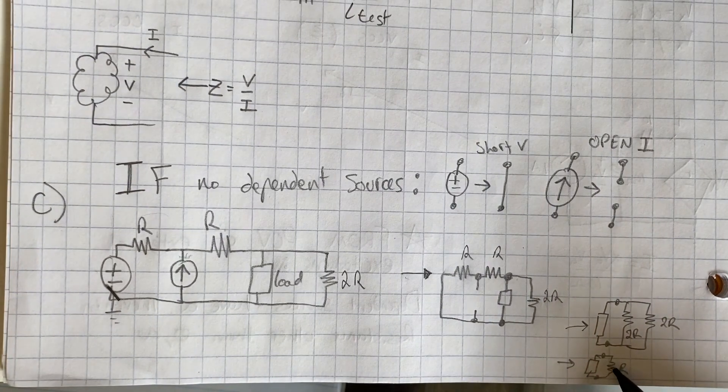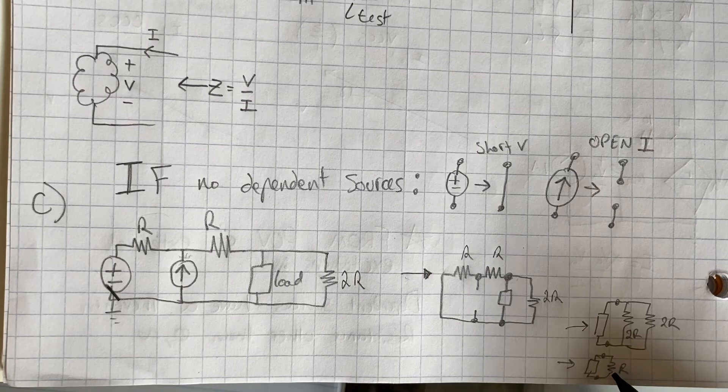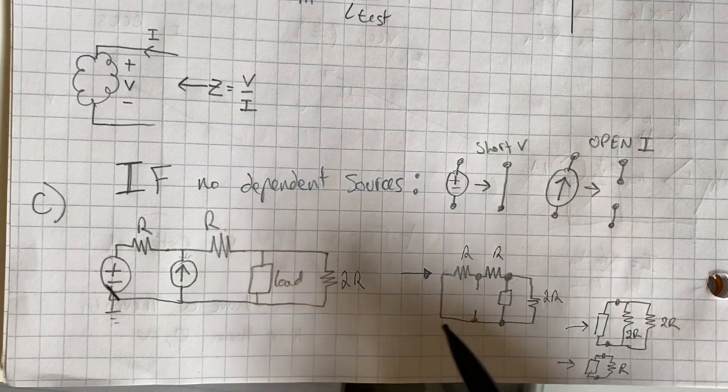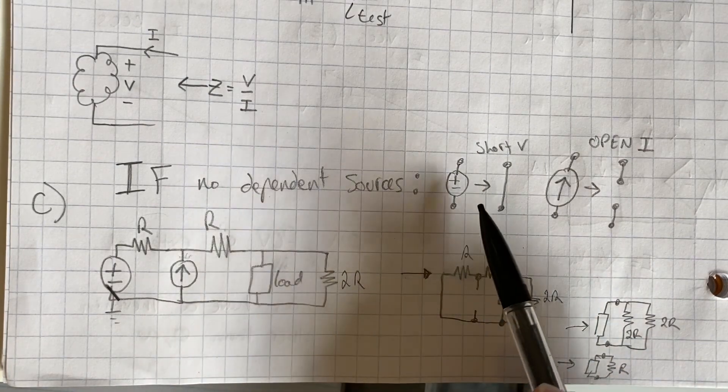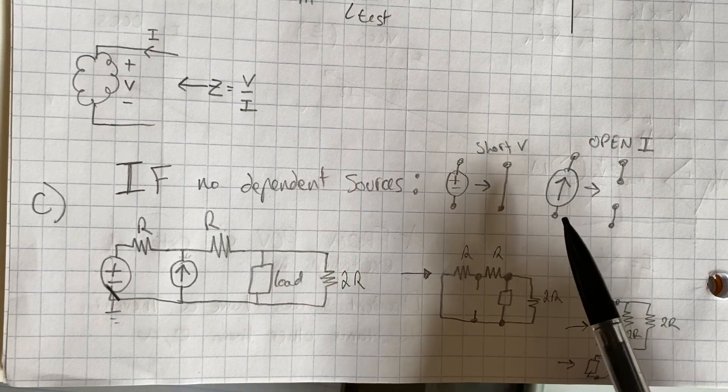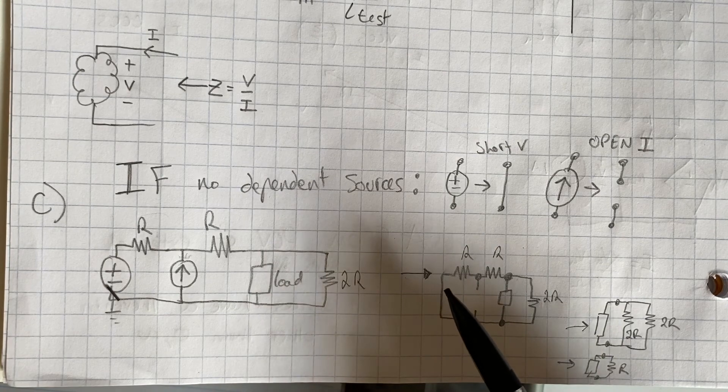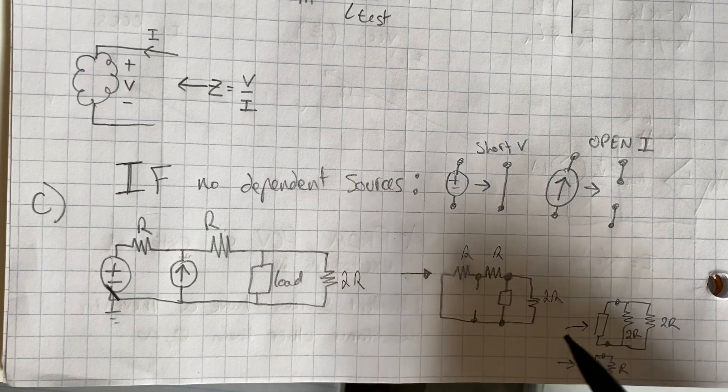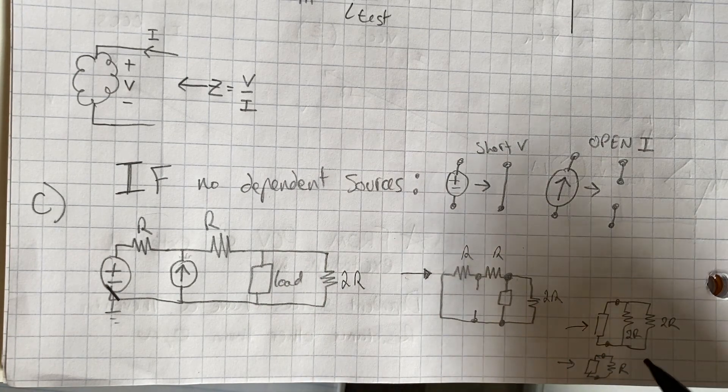And if we simplify that to R, that is the Thevenin impedance seen by this source. So if there's no dependent sources, you can short the voltage sources, open the current sources, and just use resistor combinations in parallel and series to solve for your Thevenin impedance.